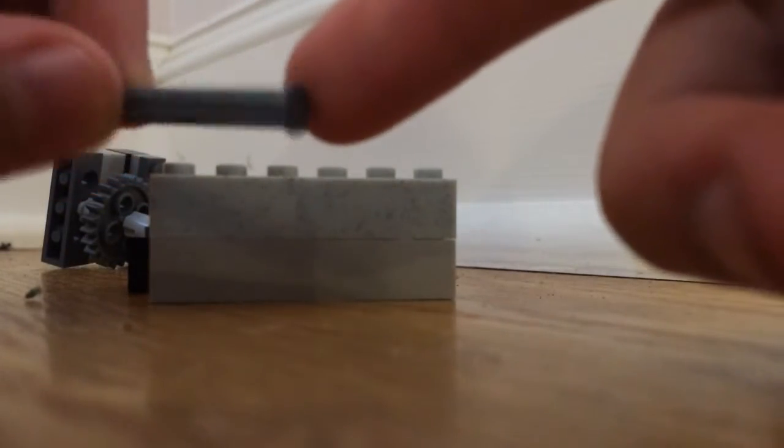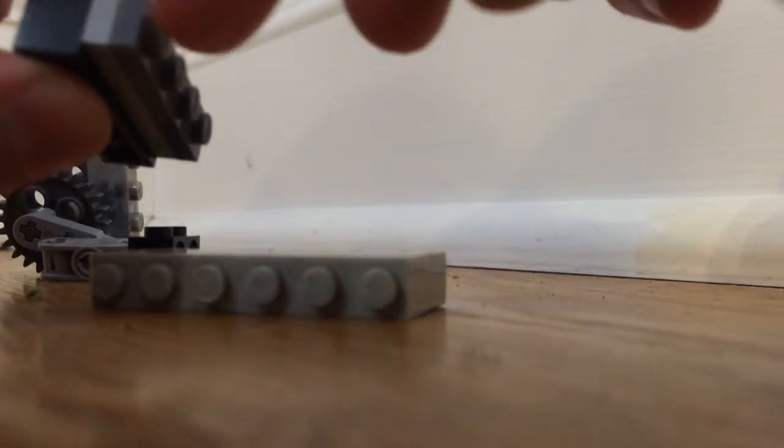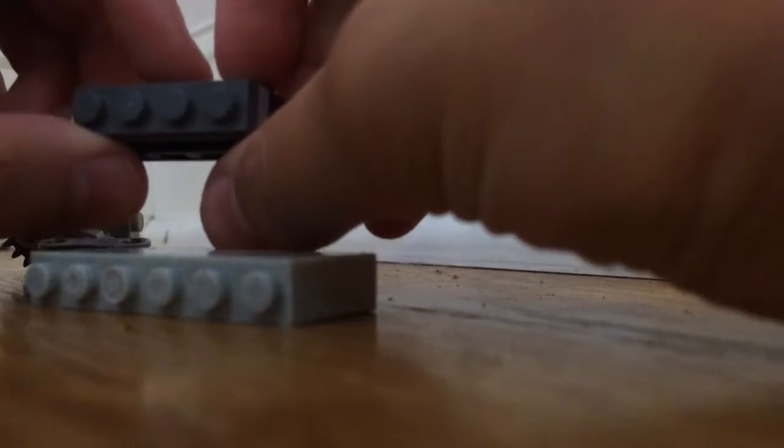Next you're gonna need this sideways headlight piece with two plates on top of it, and then you're just gonna need this simple bit right here. So the lever is just the lever piece or the handle piece with this piece on it.